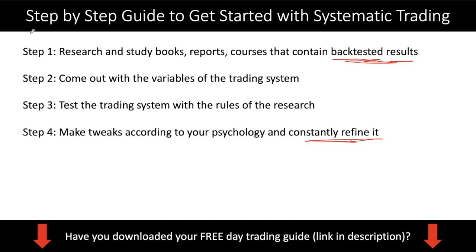Step number two is to come up with the variables of the trading system. You need to extract the information from the books, reports, or courses and find out what indicators or factors they are looking for. Are they looking for price action to break the 20-day high? Are they looking for the ATR? Are they looking for a Bollinger Band to bounce? I will give you an example of this entire process in the next slide — I just want to run you through the guide first.